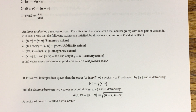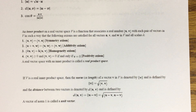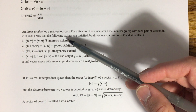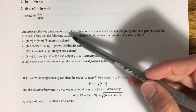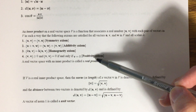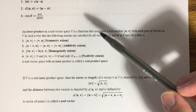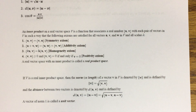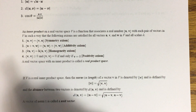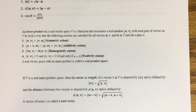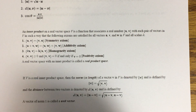Your dot product in Rn satisfies all four of these axioms, and we proved that back in Chapter 3 using these same names: symmetry, additivity, homogeneity, and positivity. But there are a number of other inner products that exist beyond the dot product that are very useful.